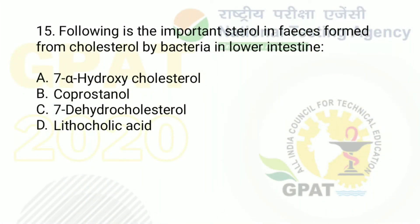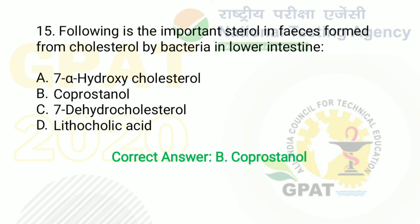Question number 15: the following is the important sterol in feces formed from cholesterol by bacteria in the lower intestine. Option A: 7-alpha hydroxycholesterol. Option B: coprostanol. Option C: 7-dehydroxycholesterol. Option D: lithocholic acid. The right answer is option B — coprostanol.